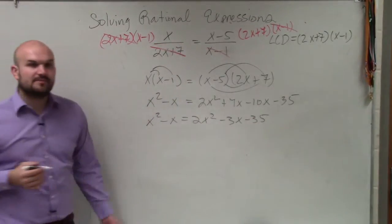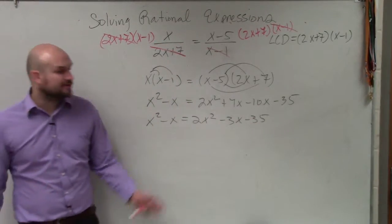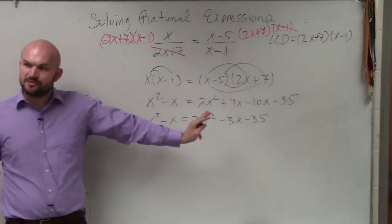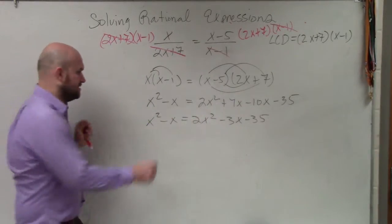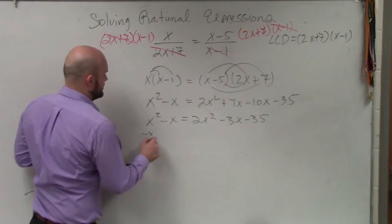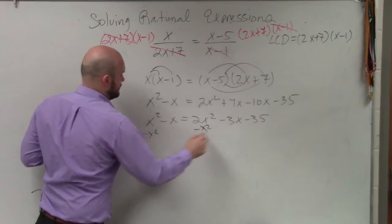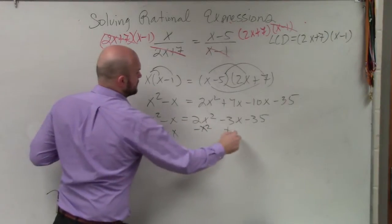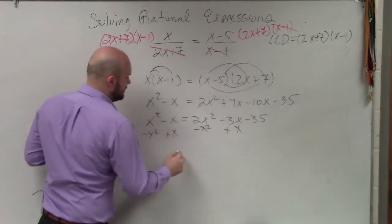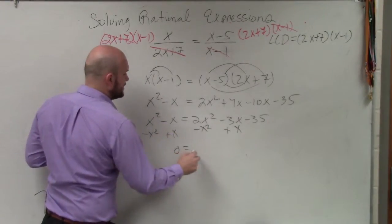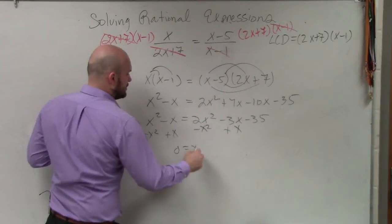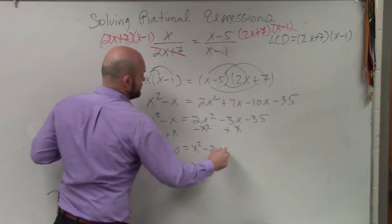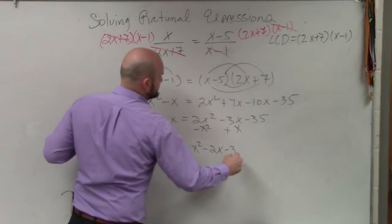And now, ladies and gentlemen, basically what I'm going to do is get all of my variables to one side. So I'll subtract an x squared, and then I'll add an x. Therefore, I have 0 equals x squared minus 2x minus 35.